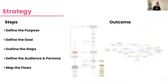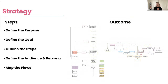During the strategy phase, I first define the purpose — why are we creating this chatbot in the first place? You can't just have a chatbot because you want one; you need a real objective. Then define the goal — what is the user going to accomplish? Then outline the steps from point A to point B. These map out in a flow diagram showing all the steps a user will take from beginning to end.